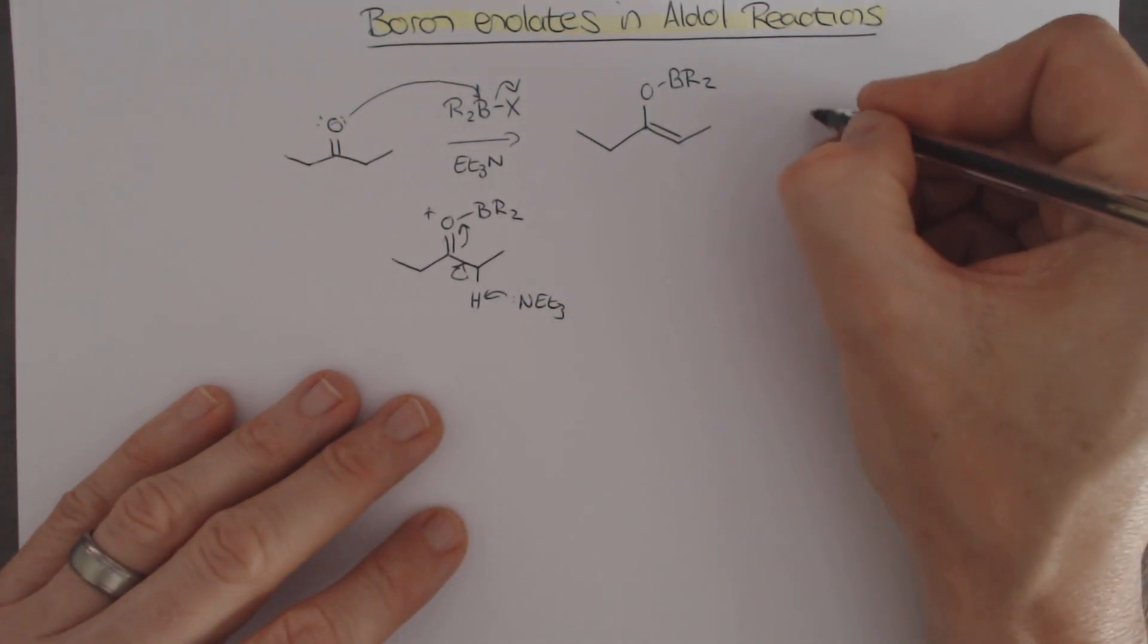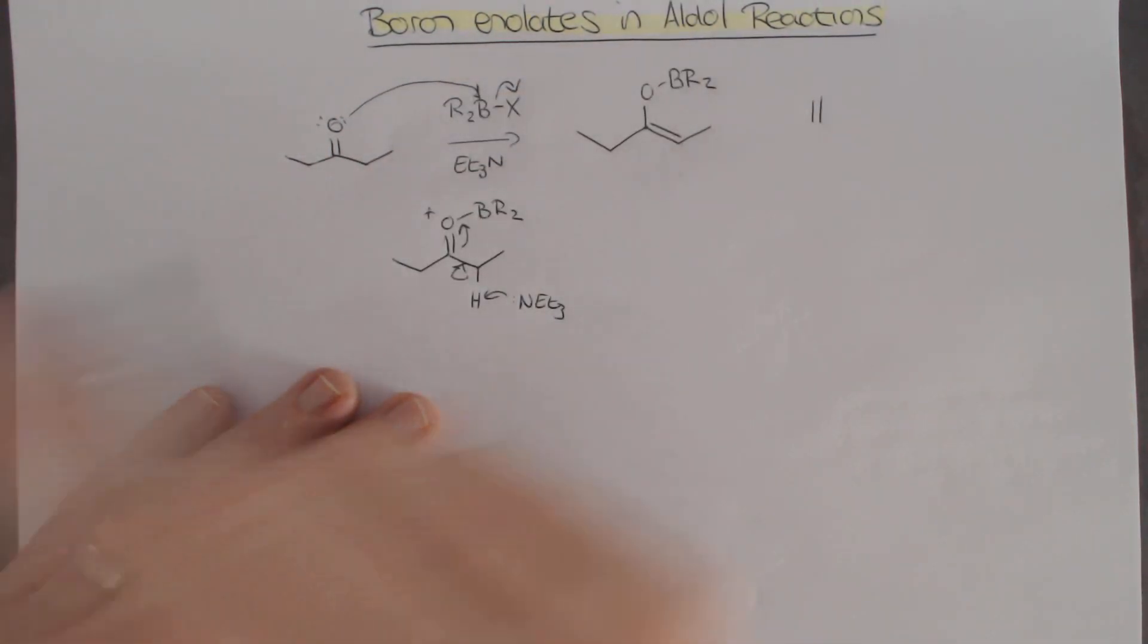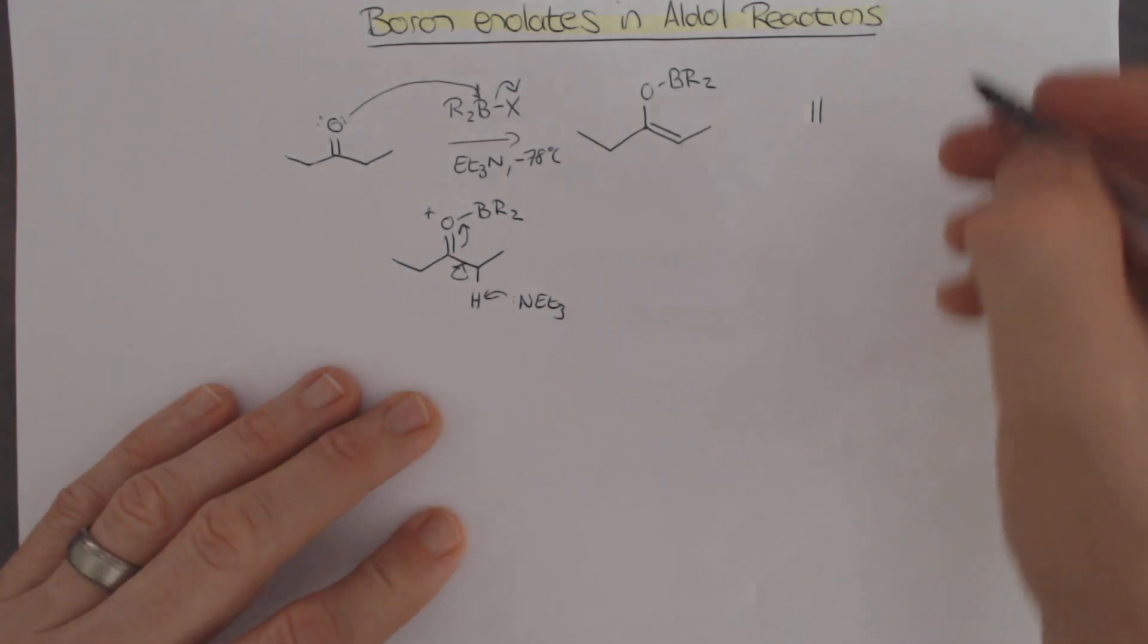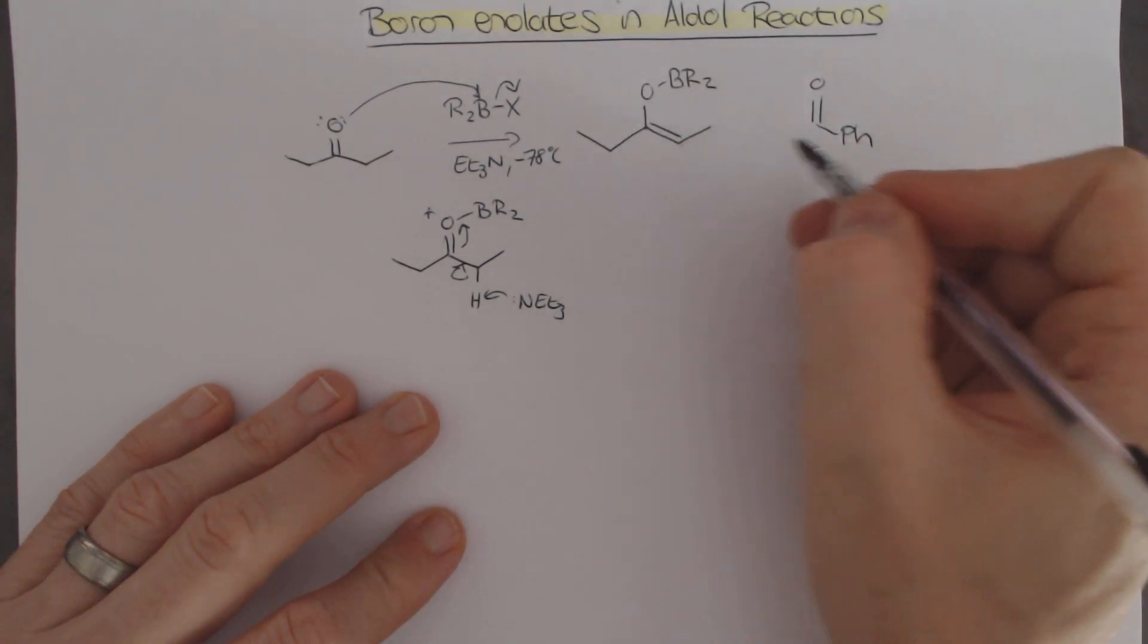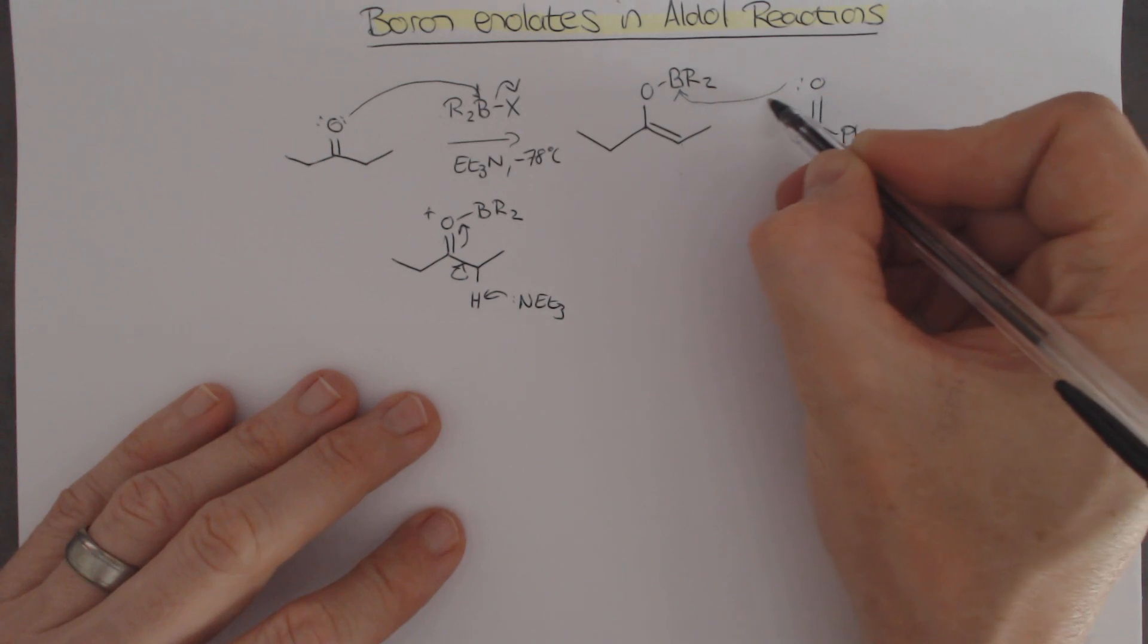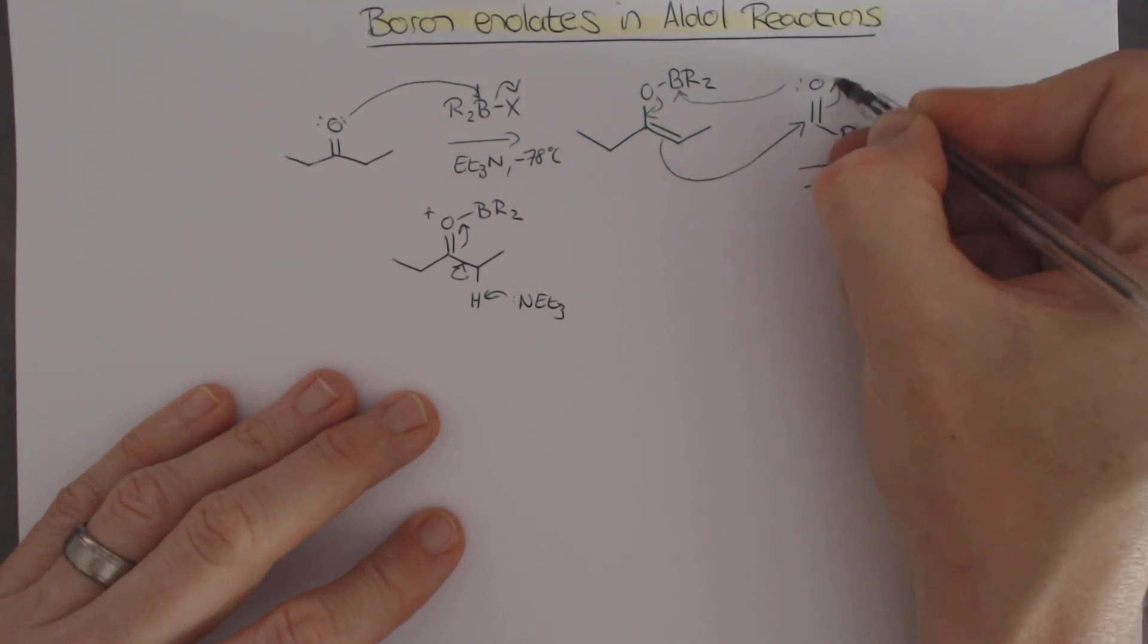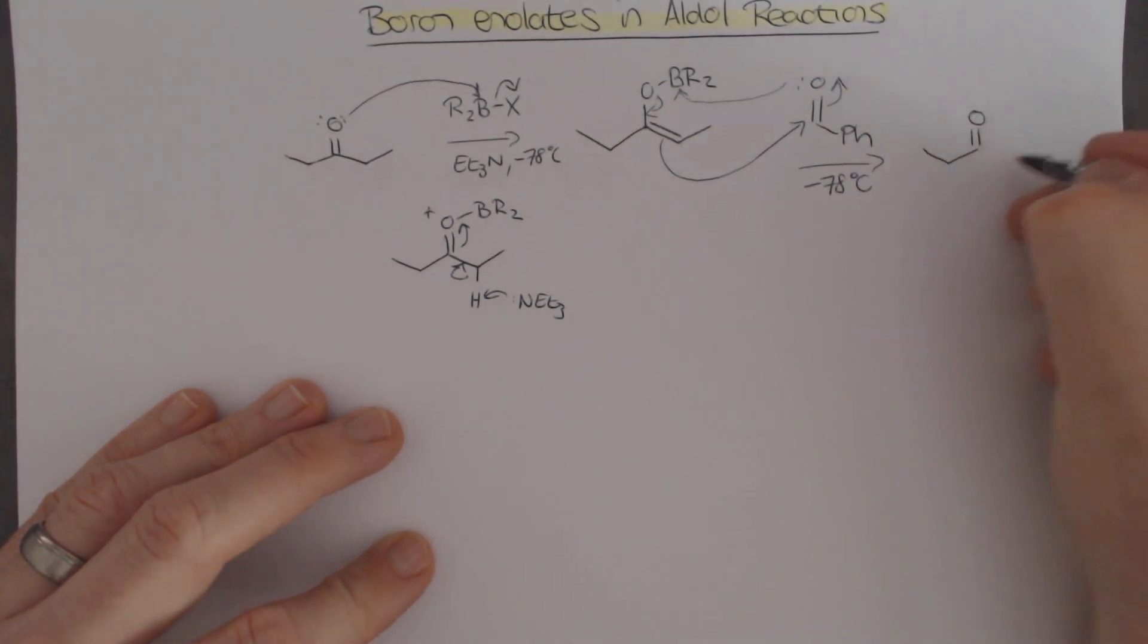Before I get there, I just want to point out that the boron enolate itself is actually incredibly reactive to aldehydes. This reaction that we've done over here can be done, as compared to the silyl enol ether, at very low temperatures. We can get this at minus 78 degrees Celsius. When we add our aldehyde, this is so reactive that we can still do this reaction at minus 78 degrees Celsius again. What happens is the boron, being a good Lewis acid, is able to complex to the oxygen of the aldehyde. In doing that, it activates the enolate to then react with the aldehyde like that.